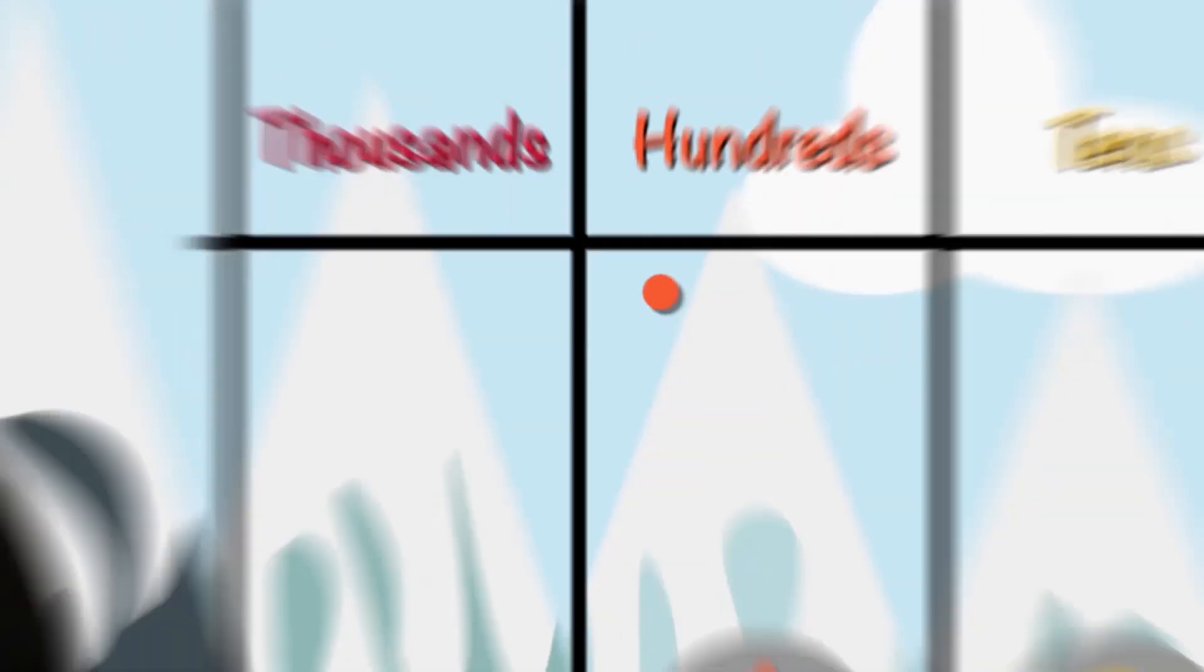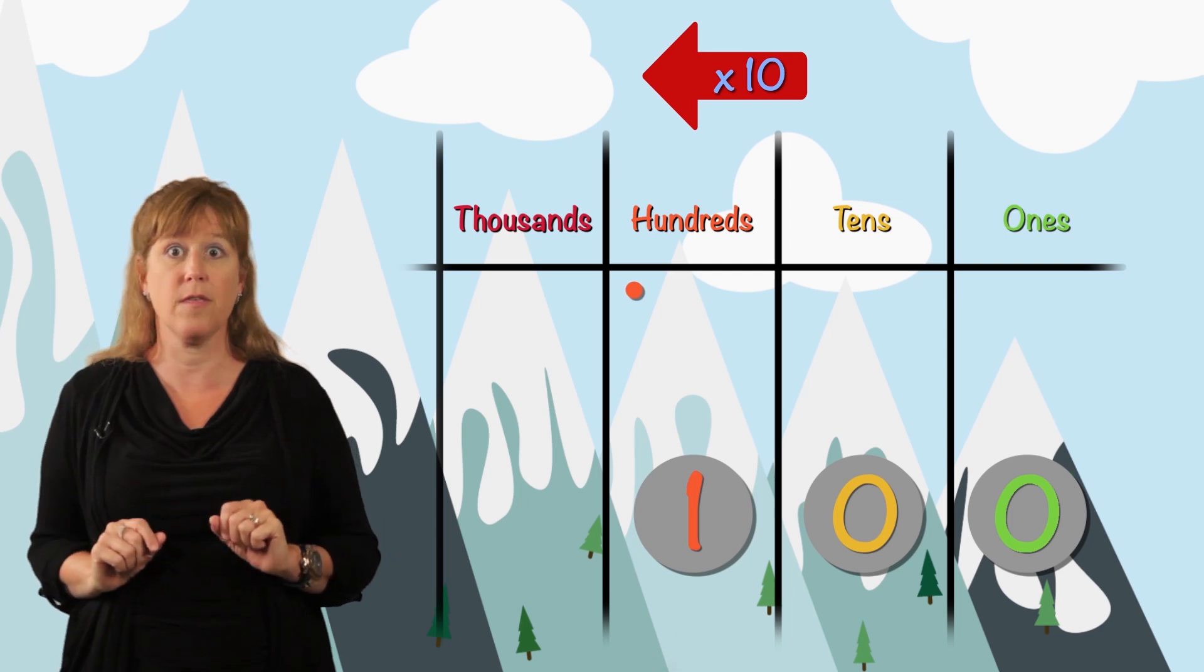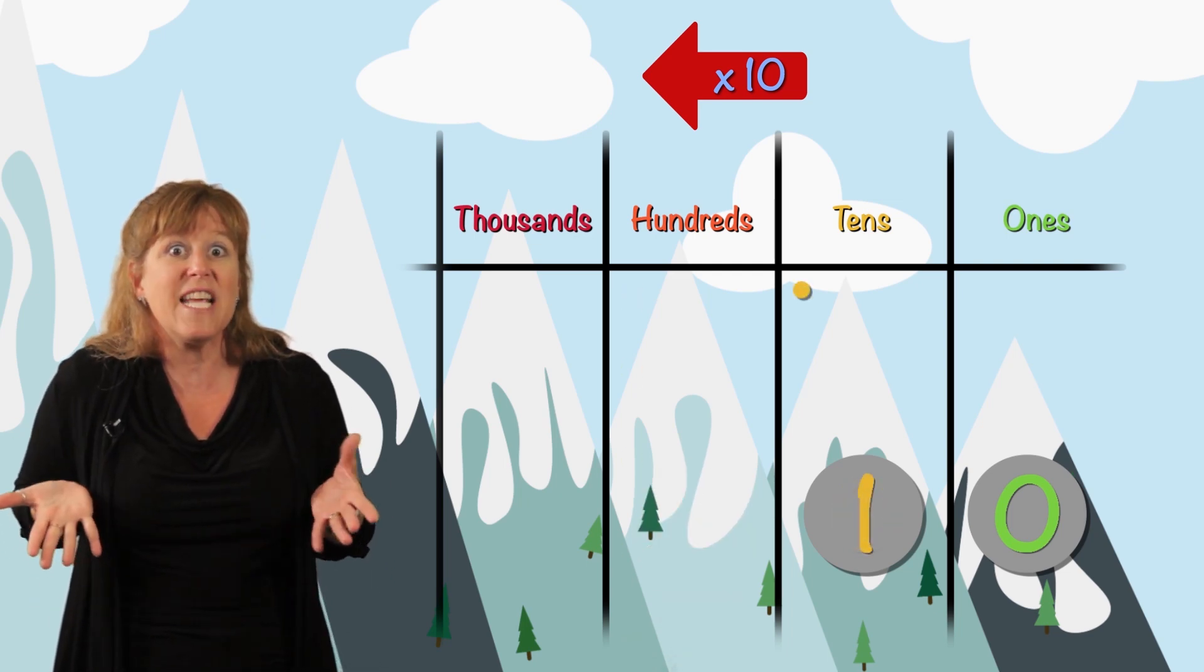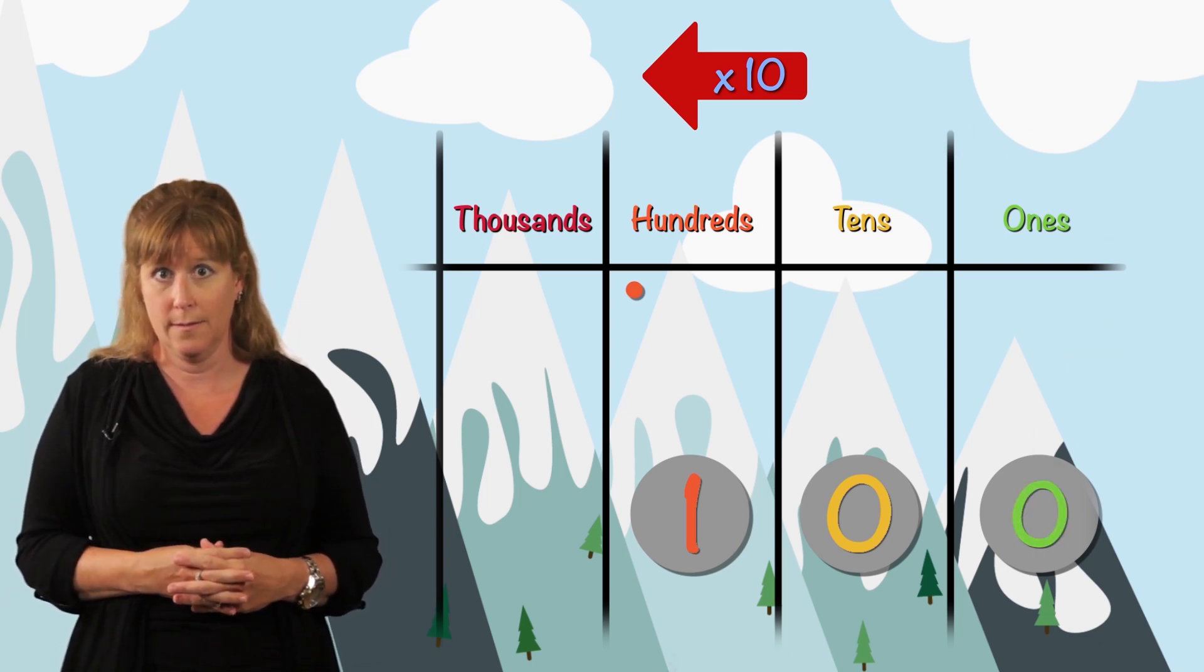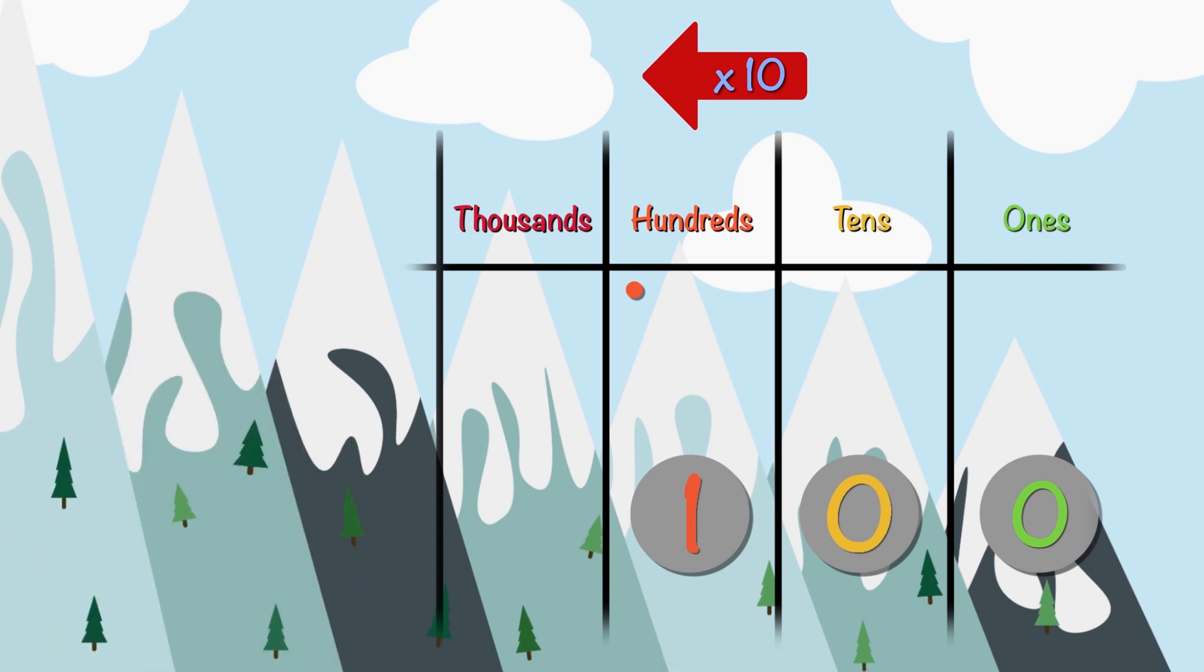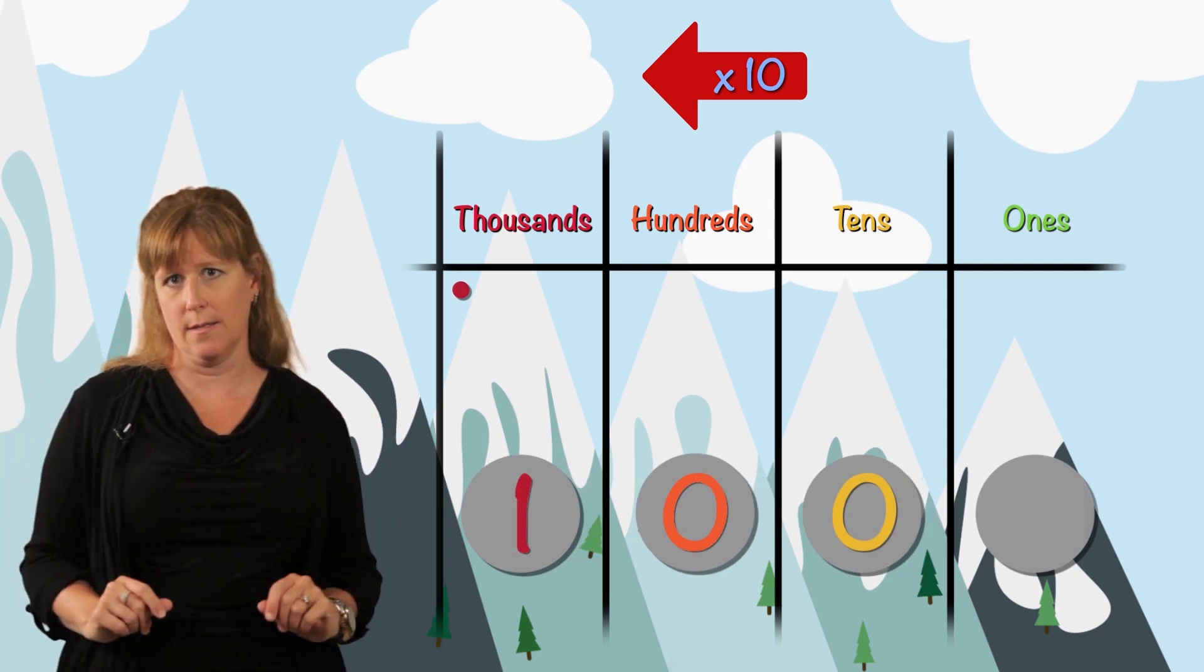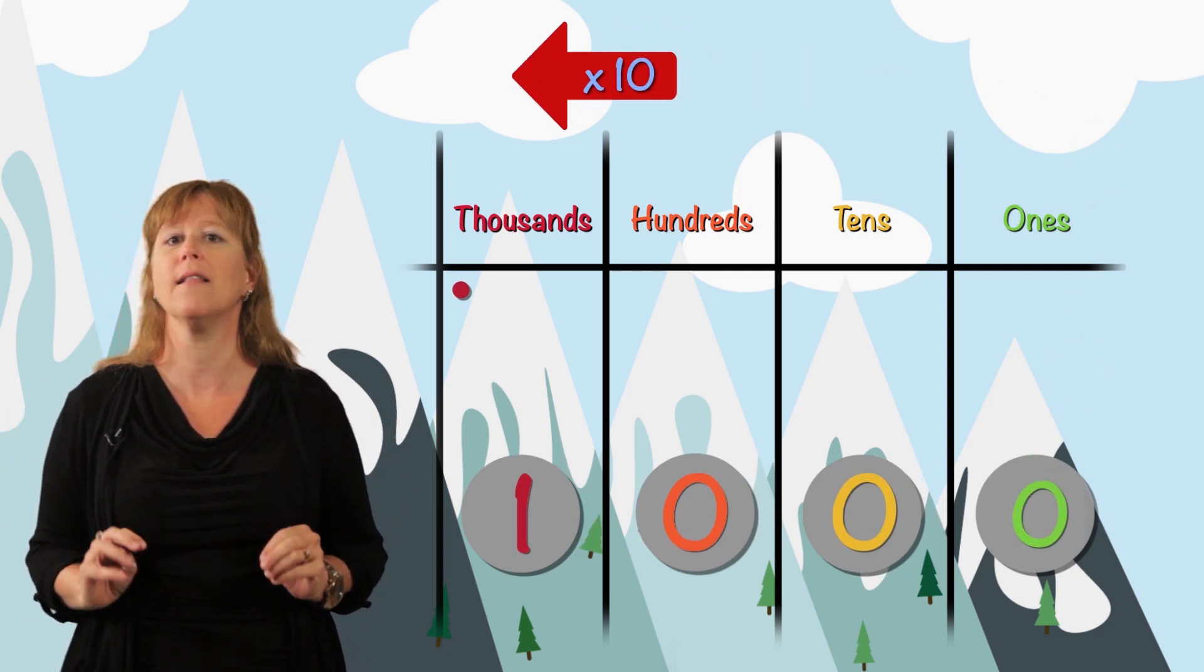Now we have one disk in the hundreds. So when we multiply by ten, we're just shifting everything one column to the left. It's like we're taking this zero and adding it to the end of the number. So what would one hundred times ten be? One hundred times ten is one thousand. We pop this zero in and move one column to the left.